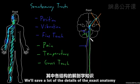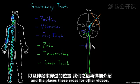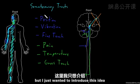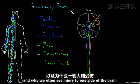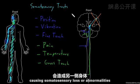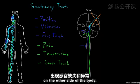We'll save the details of the exact anatomy and where these tracts cross for other videos, but this introduces the concept of somatosensory tracts and why injury to one side of the brain often causes somatosensory loss or abnormalities on the other side of the body.